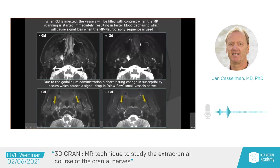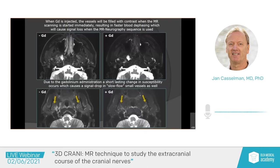Suddenly I see my mandibular nerve with muscular branches. Another example: I can't see my branches before gadolinium, I inject, and there I have my alveolar nerve and my lingual nerve on both sides. The reason is that when gadolinium is injected, the vessels are filled with contrast, and if you start immediately after injection, that results in faster blood defacing, causing signal loss when the MR neurography sequence is used. Due to gadolinium administration, a short-lasting change in susceptibility occurs, causing a signal drop in slow flow, in veins, and small vessels as well. So you get rid of these vessels just by injecting.